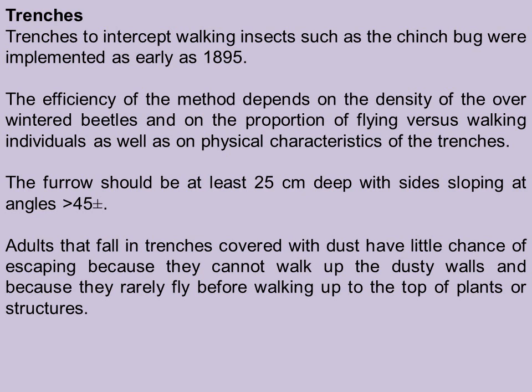The efficiency of the trench method depends on the density of overwintered beetles and on the proportion of flying versus walking individuals, as well as on the physical characteristics of the trenches. Trenches are ditches dug around the cropping fields. The furrow should be at least 25 centimetres deep with sides sloping at angles of about 45 degrees. Adults that fall into the trenches — termed 'khai' in Hindi — covered with dust have little chance of escaping, because they cannot walk up the dusty walls and rarely fly before walking up to the top of plants or such structures.